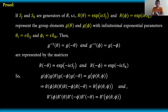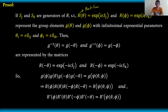Suppose we consider the generators Sj and Sk of R, such that R as a function of theta — which is a rotation matrix — is equal to e to the i epsilon Sj, and R as a function of phi is equal to e to the i epsilon Sk. These represent the group elements G(theta) and G(phi) with infinitesimal exponential parameters given by these equations.